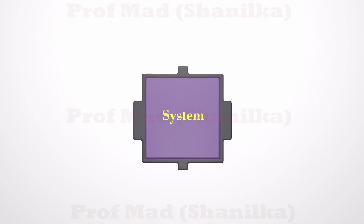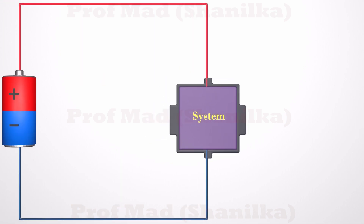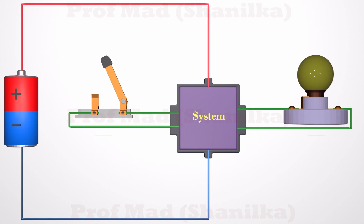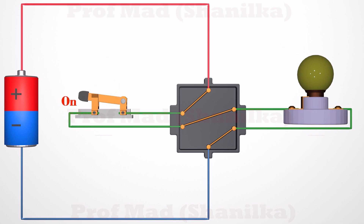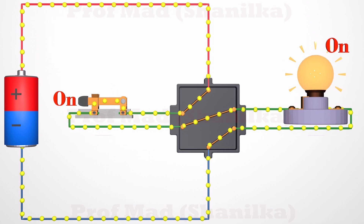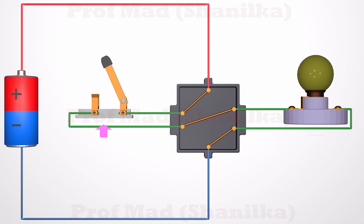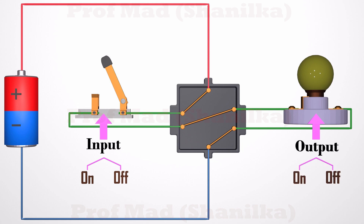Here we have some kind of a system. It must be powered from an external power source such as a battery. There are two sides that can be used to connect a switch and a light bulb to this system. To work the same as the previous example, we can connect the wires like this. Since the switch is at off state, the bulb is also at off state. When we turn on the switch, the light bulb turns on. When we turn off the switch, the light bulb turns off. In this system, we are controlling the switch, so that is the input of this system, and according to our input the bulb changes its state, so the bulb is the output. The input has two states — on and off — and the output also has the same states, on and off.